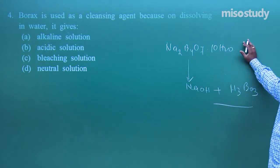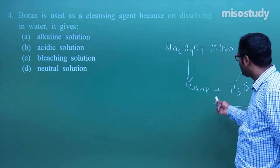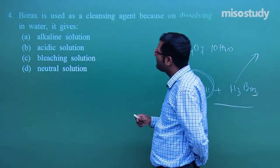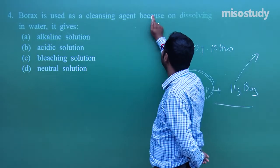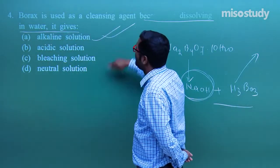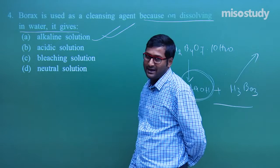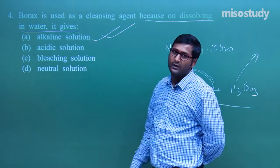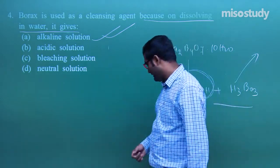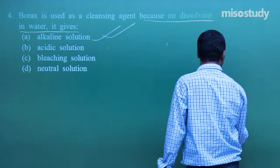Since NaOH is a strong base and H₃BO₃ is a weak acid, the solution is alkaline in nature. So in this question, borax is used as a cleansing agent because on dissolving in water it gives an alkaline solution — formed by a strong base (NaOH) and a weak acid (H₃BO₃).